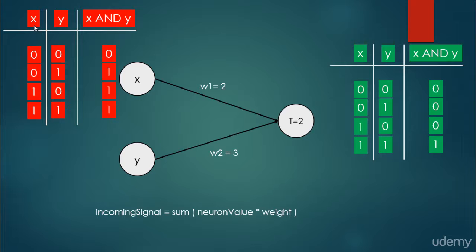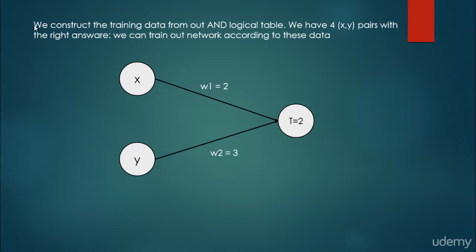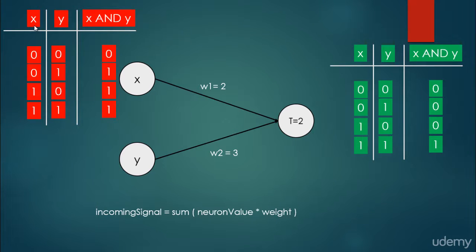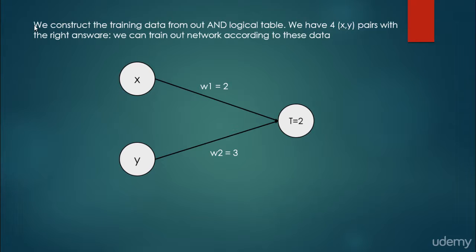So we have to train our network to learn how to produce the right values. We construct the training data from our AND logical table. We have 4 x-y pairs: (0,0), (0,1), (1,0), and (1,1). This is the training data, because we know for sure from our logical AND table that if x equals 0 and y equals 0, our neural network should give us 0, and whenever x equals 1 and y equals 1, it should give us 1. We have the 4 pairs with the right answers, and we can train our network according to this data.